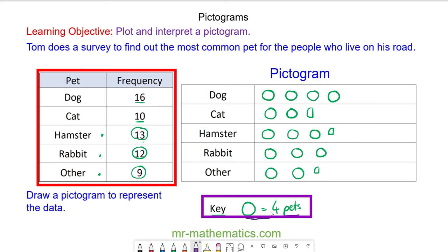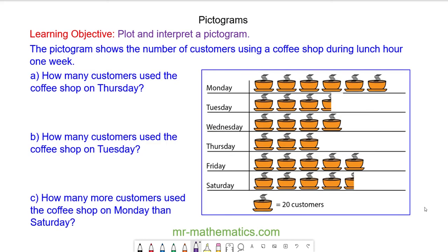Okay, let's try another question. The pictogram shows the number of customers using the coffee shop during lunch hour one week. How many customers use the coffee shop on Thursday? Do you want to try questions A, B, and C yourself? Pause the video and you can resume it when you're ready.